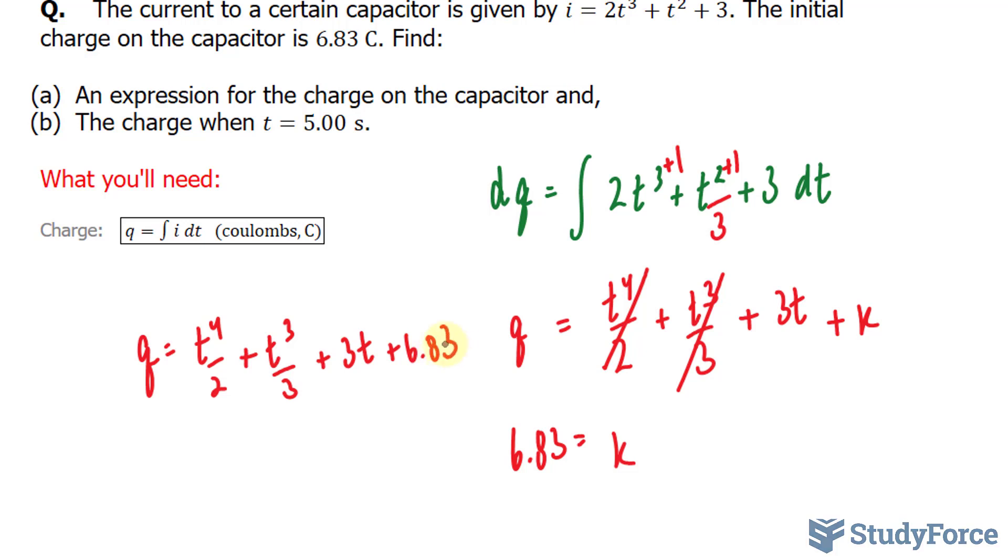Now we can move on to part B, which asks for the charge when t = 5. That's not hard to do. I'll just substitute 5 into the t's, and I should get my charge in Coulombs.